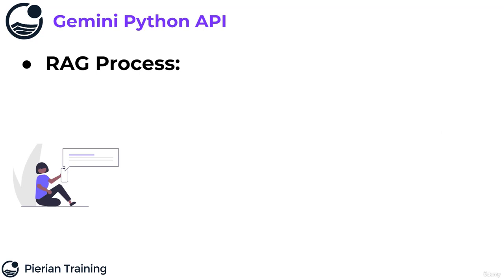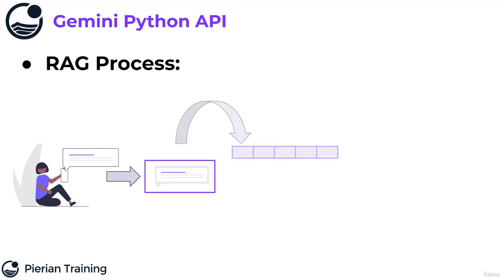So how does the RAG process actually work? The way it works is you have a user and they ask a query — for example, they ask about the vacation policy at the company. Then we're going to take that query and embed it into a vector representation. So we take the text query of the user and before we even send it to Gemini's large language model, we send it to an embedding model. Now I have both the original query text and the embedded vector representation. I've also taken my set of documents — such as all my internal documentation about HR — and vectorized those as well.